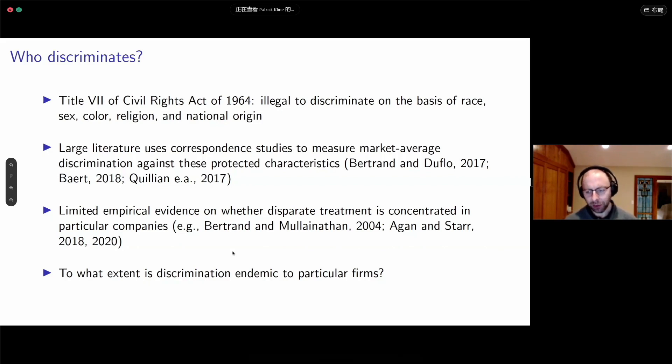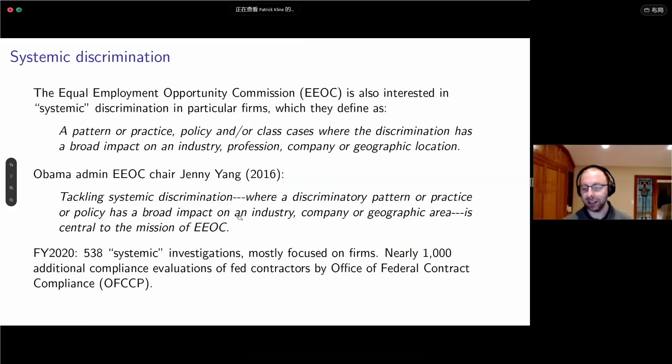The reason for their popularity is that we are able to directly manipulate perceptions of protected characteristics in a ceteris paribus fashion that allows us to hold all other explanations for differences in employer response constant. However, although we found that there tends to be quite a lot of bias against particular traits, such as having a distinctively black name, we don't have much evidence on whether that bias is concentrated in particular companies.